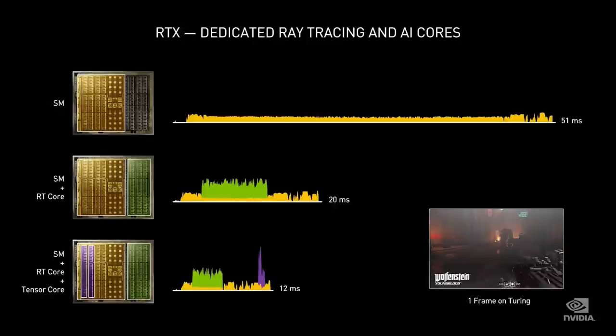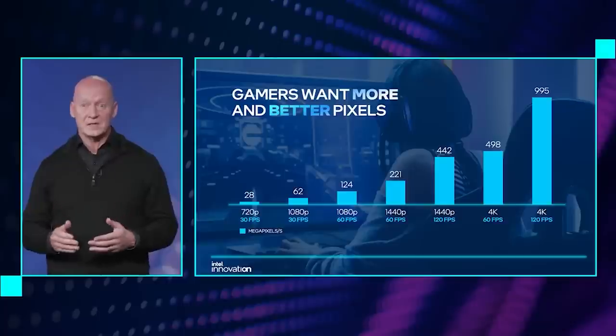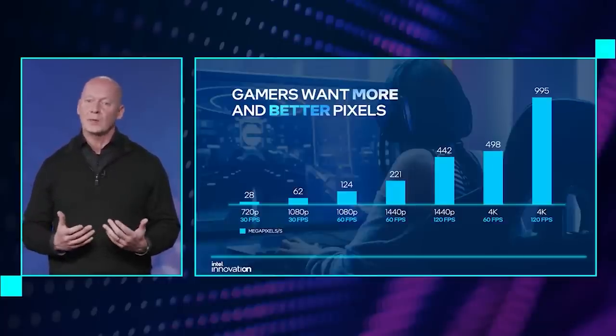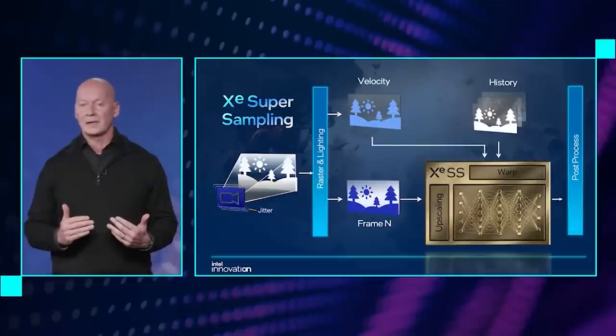One key difference is that while DLSS runs on NVIDIA's Tensor cores and therefore cannot be run on, say, a Radeon GPU, on ARC architectures XCSS can be accelerated using specific instructions. If it runs on a competitor GPU or an older Intel XE GPU, it will still run — it will just take longer to upsample that frame. However, it's still a speed-up. So for example, if you're running a 6800 XT and a game supports Intel's XCSS, it's still going to be faster running XCSS at 4K than trying to run the game natively at 4K.